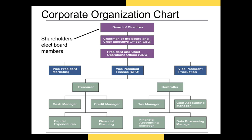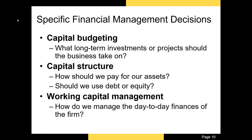Often, the CFO will be a CPA, or certified public accountant. The chief financial officer is overseen by either the COO, or chief operations officer, or the CEO, or chief executive officer. The CEO of a publicly traded firm is overseen by the board of directors, who are elected by the shareholders of the firm. Financial managers have several different roles in a firm.